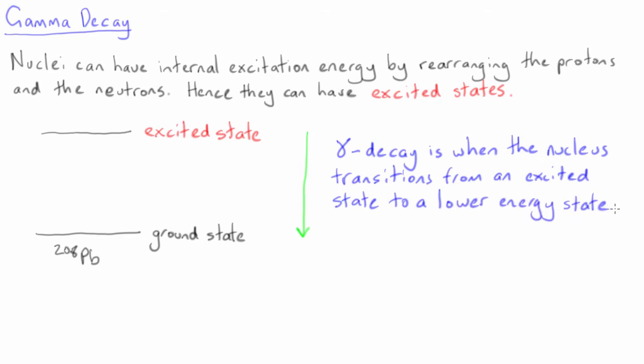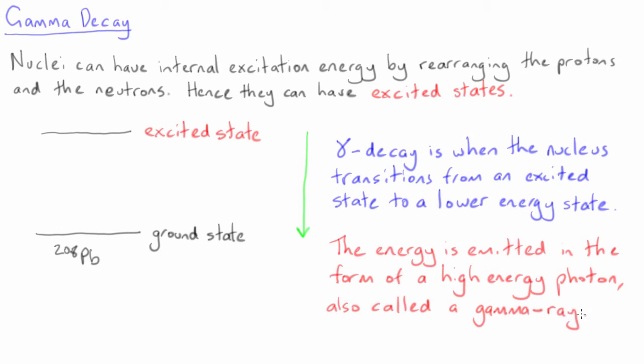When a nucleus de-excites from a higher-lying state to a lower one, the energy loss can be released as a high-energy photon. This process is a gamma decay, and the emitted photon is commonly referred to as a gamma ray.